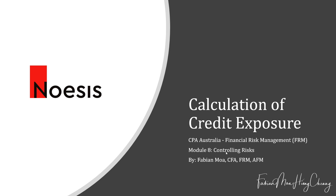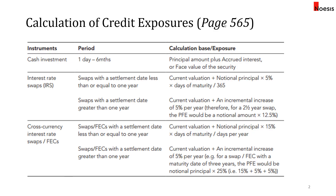In Module 8 on controlling risk, there is one section on the calculation of credit exposure, which you can find on page 565. For different financial instruments, it will have different credit exposures. The three instruments covered in the syllabus are cash investments, interest rate swaps, and cross-currency interest rate swaps or FECs.